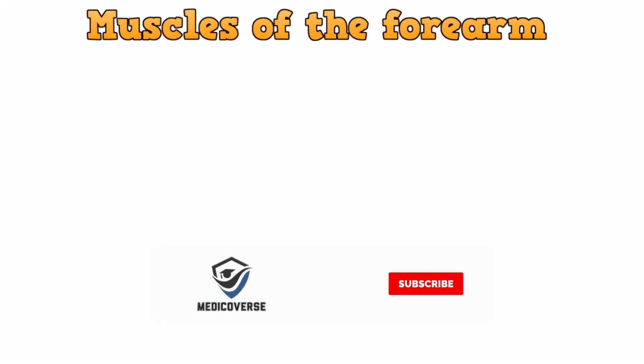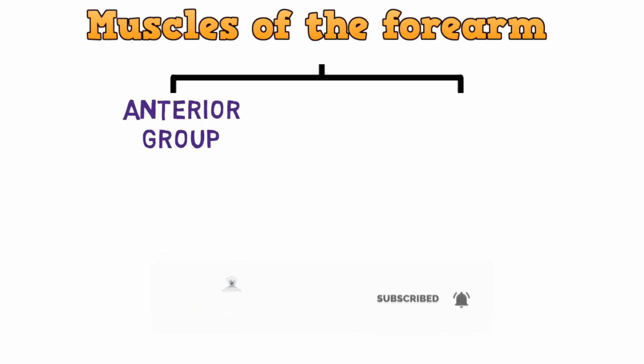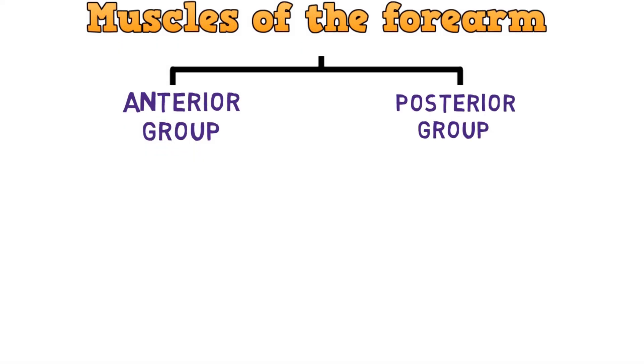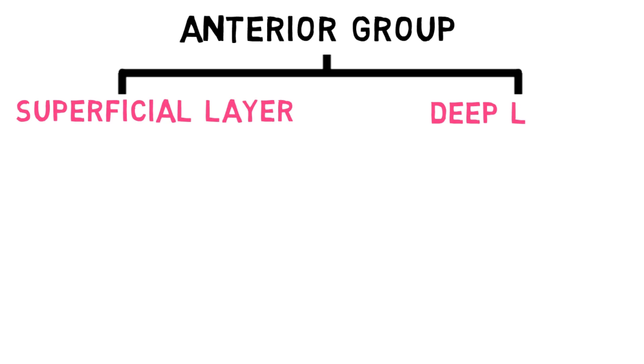Muscles of the forearm can be divided into two groups: anterior group and posterior group. The anterior group is subdivided into two groups: muscles of the superficial layer and muscles of the deep layer.